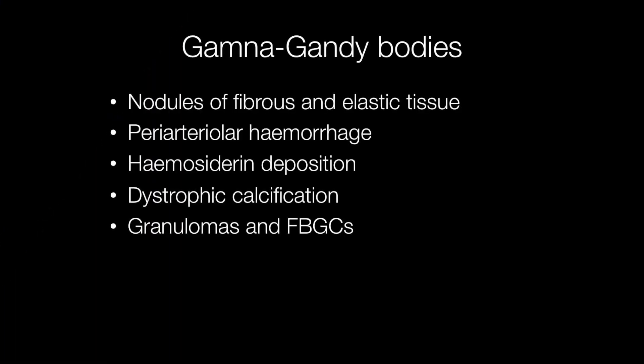The histological features of Gamna-Gandhi bodies include nodules of fibrous and elastic tissue, peri-arteriole haemorrhage, haemosiderin deposition and dystrophic calcification, and the formation of granulomas and foreign body type giant cells.